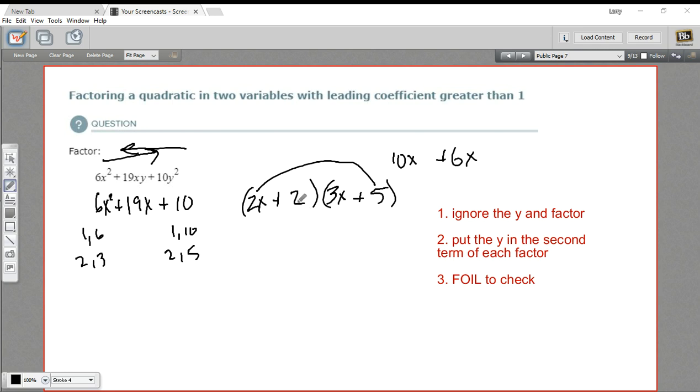What if I put the 5 in here? I'd have 15. Oh, yeah. I think that's going to work. So if we move these around, put the 2 over here and the 5 over here. Now I have 2x times 2. That's 4x. And 5 times 3x is 15x. So I get 19x.